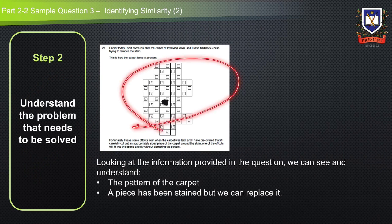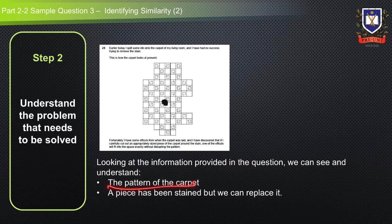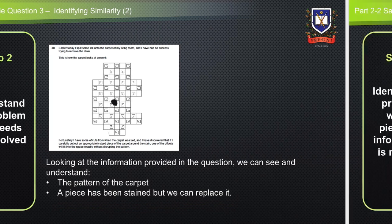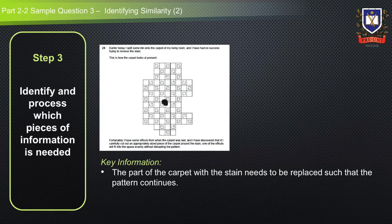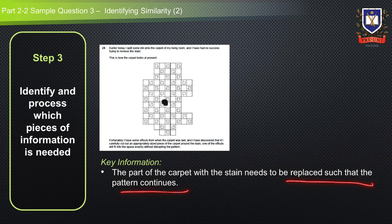Step two is to understand the problem that needs to be solved. Looking at the information provided in the question, we can see and understand the pattern of the carpet — a piece has been stained, but we can replace it with an off-cut. In step three, we need to identify and process which pieces of information are needed. A key piece of information is that the stained part of the carpet needs to be replaced such that the pattern continues.